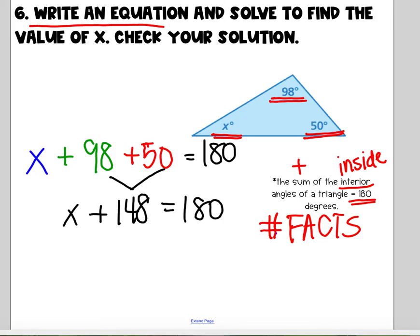Now I have x plus 148. I'm going to do the inverse and subtract 148. So x, 148 minus 148, 0, equals, what's 180 minus 148? 32 degrees.